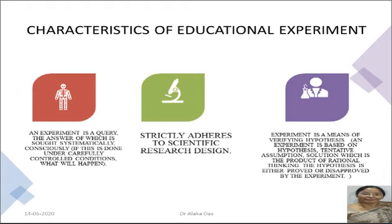But to be truly experimental, it must adhere to some scientific conditions or rules. Experimental research is very specific, and its results are true, authentic, and valid because it fulfills specific conditions or basic assumptions — that is why it is called scientific research design. Another characteristic is that it is a means of verifying hypotheses. A hypothesis is a tentative solution to a problem, an assumption based on rational thinking or previous experience, and through experimental research these hypotheses are tested.